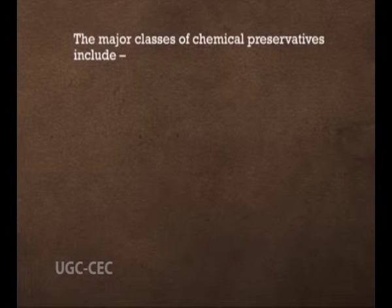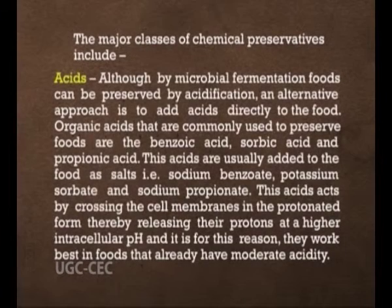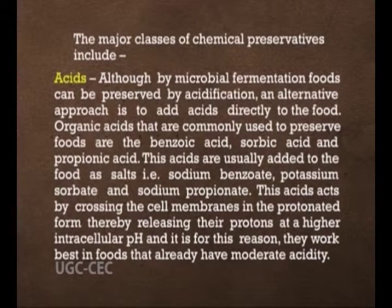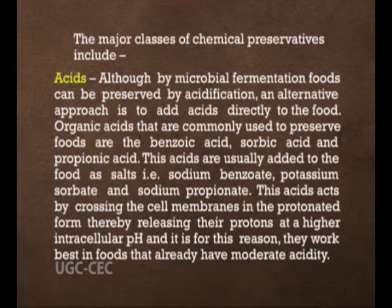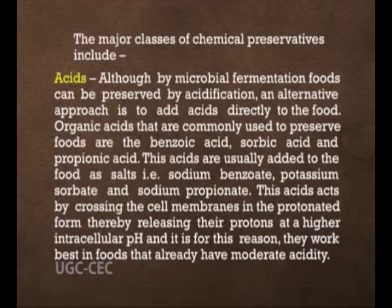Many kinds of chemicals are used to preserve food. The major classes of chemical preservatives include: first, acids. Foods can be preserved by acidification through microbial fermentation, or by adding acids directly. Organic acids commonly used include benzoic acid, sorbic acid and propionic acid, typically added as salts such as sodium benzoate, potassium sorbate and sodium propionate. These acids act by crossing the cell membrane in protonated form, releasing their protons at a higher intracellular pH, and work best in foods that already have moderate acidity.